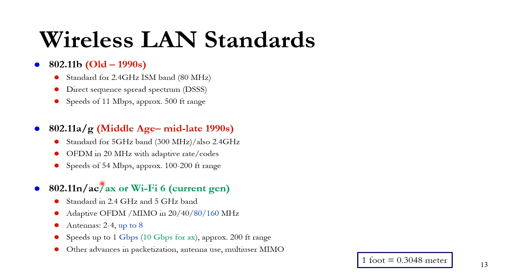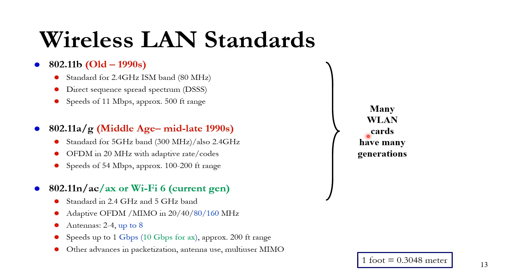Newer Wi-Fi technologies include 802.11n, 802.11ac, and 802.11ax, covering different frequency bands and modulation techniques. The current standard is Wi-Fi 6, which is the ax generation. How do we agree on the details — what kind of modulation, antenna size, bandwidth? This is done through standardization. Many wireless LAN cards now support multiple generations, so when buying a new one, make sure it covers the fastest current standard.